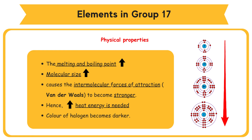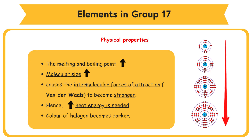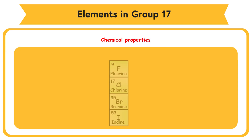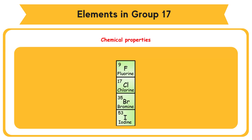The color of halogens becomes darker going down the group. All Group 17 elements exhibit similar chemical properties because every halogen atom has 7 valence electrons.